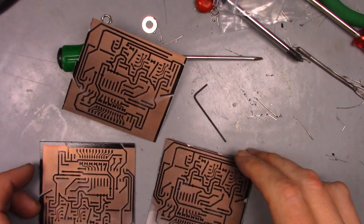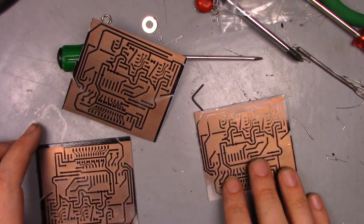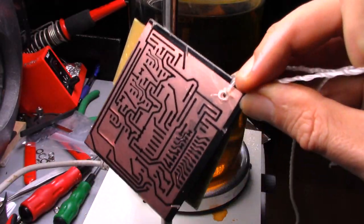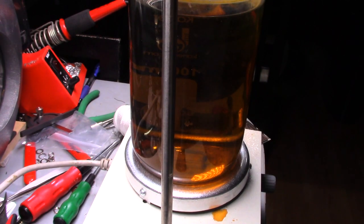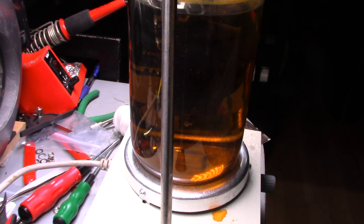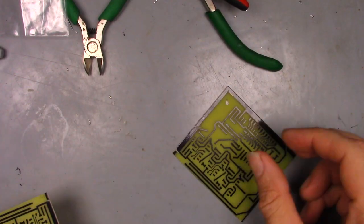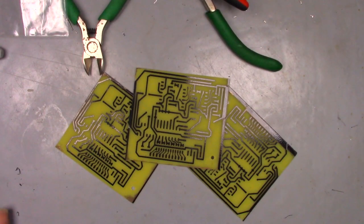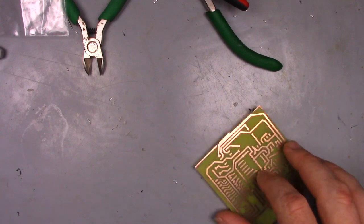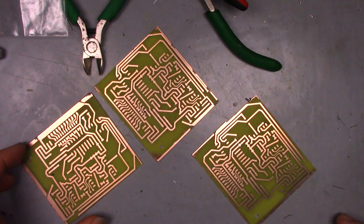And here are the boards cut to size. Into the ferrochloride they go. Here's a time-lapse of an etch. Real time, about half an hour. And there we have it. Three etched boards. With a quick dip in some paint thinner, the resist was removed.